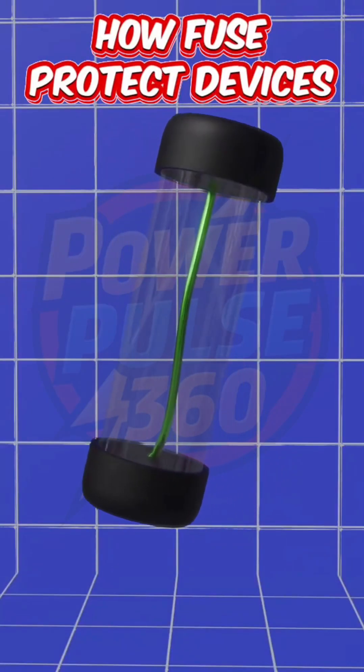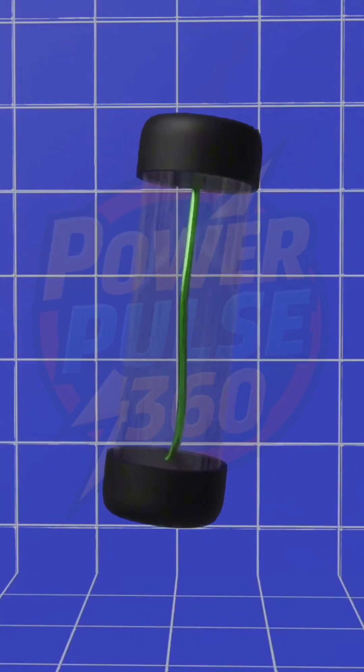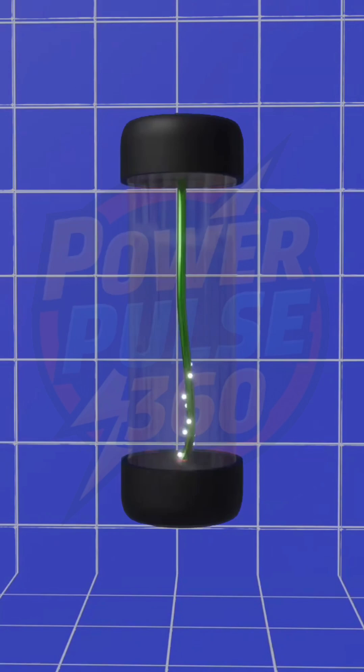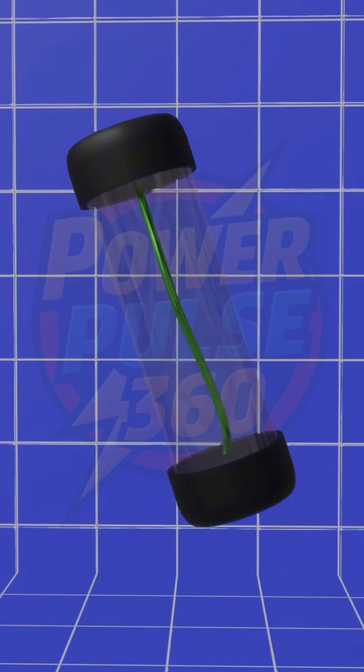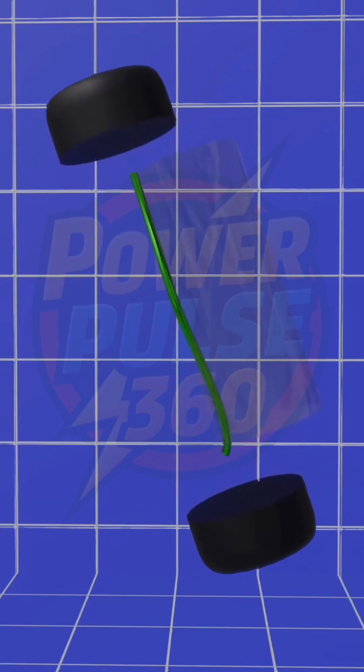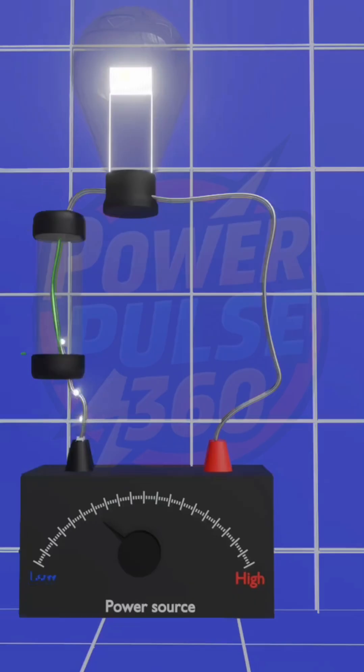Ever wondered what protects your electrical devices from overloads? Meet the tiny but powerful fuse. A fuse is a small yet crucial safety device in electrical circuits. It consists of a thin metal wire enclosed in a glass or ceramic casing.